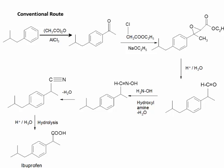In this conventional route, we can see that ibuprofen is formed in six steps, hence the yield of the corresponding ibuprofen is lowered.